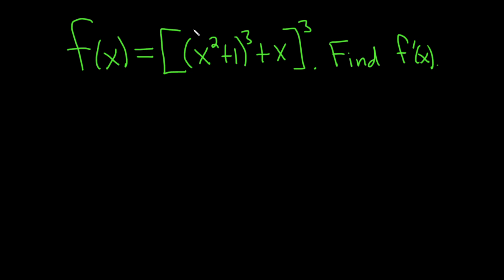So we have f of x equals, and we have a bracket, x squared plus 1 cubed plus x, and then another bracket cubed.